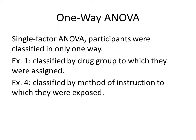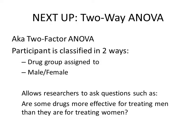Section 25 will introduce and discuss the two-way ANOVA, also known as a two-factor ANOVA, where participants are classified in two ways — for example, by the drug group assigned and also by gender, either male or female. A two-way ANOVA allows researchers to ask questions such as whether some drugs are more effective for treating men than for treating women.